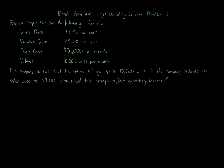Break-even and target operating income problem: Papaya Corporation has the following information — sales price $9 per unit, variable cost $5 per unit, fixed cost $21,000 per month, volume 10,500 units per month. The company believes that volume will go up to 13,000 units if the company reduces its sale price to $7. How would this change affect operating income?